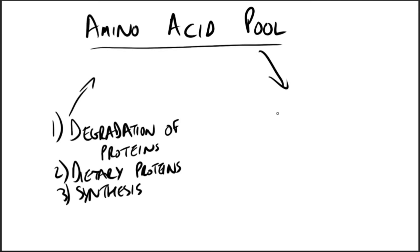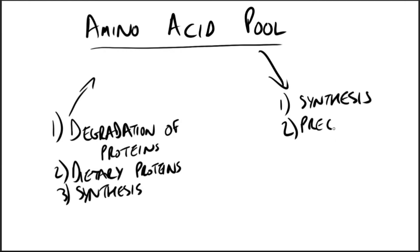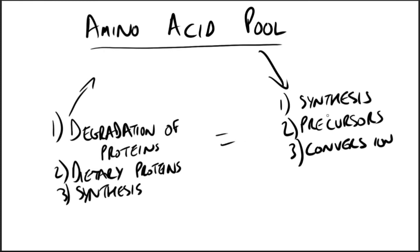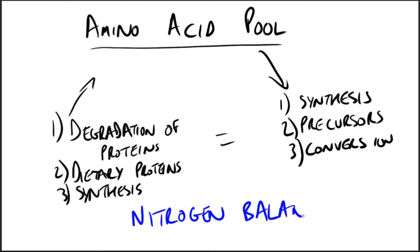The pool is also depleted by conversion of amino acids to glucose, glycogen, fatty acids, ketone bodies, or carbon dioxide and water. In healthy, well-fed individuals, the input to the amino acid pool is balanced by the output. The amino acid pool is said to be in a steady state, and the individual is said to be in nitrogen balance.